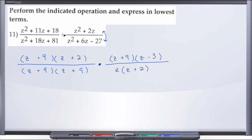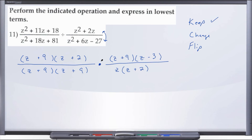We've factored each numerator and denominator, changed from division to multiplication, and taken the reciprocal of the second fraction. Some of you may remember from class or the previous video — we talked about KCF: Keep, Change, Flip. Keep the first fraction exactly as given, Change from division to multiplication, and Flip the second fraction. If you can remember KCF, you're good to go.